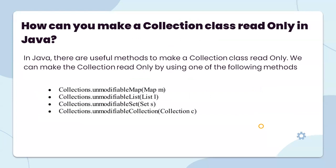How can you make a collection class read-only in Java? There are useful methods to make a collection read-only. We can use one of the following methods from java.util.Collections: unmodifiableMap, unmodifiableList, unmodifiableSet, or unmodifiableCollection. By using these methods, the class becomes read-only and you cannot change it.